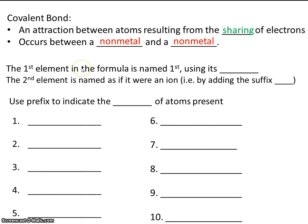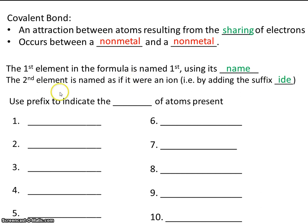And here are the rules for naming covalent molecules. The first element in the formula is named first using its name. The second element is named as if it were an ion — that is, by adding the suffix "-ide." We also have to use a prefix to indicate the number of atoms present.